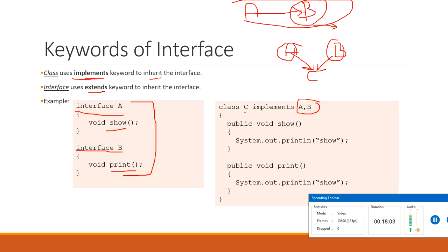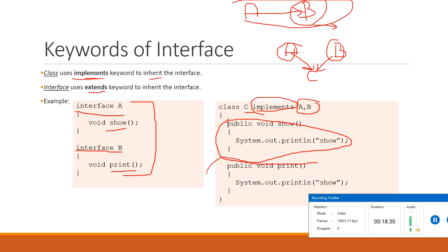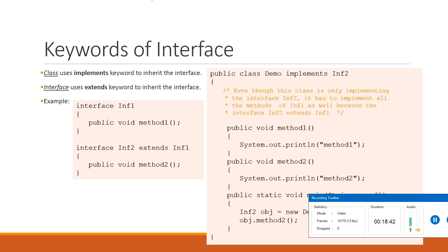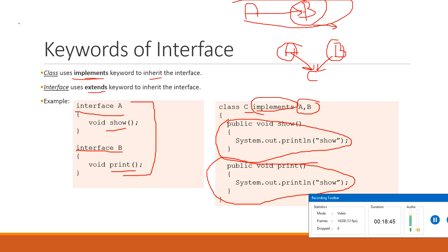Since class C implements two interfaces, we write: 'class C implements Interface1, Interface2'. Interface A has method show — we provide its implementation. Interface B has method print — we provide its implementation. Class C must provide implementation for both methods. This was the first concept: multiple inheritance through a class implementing multiple interfaces.